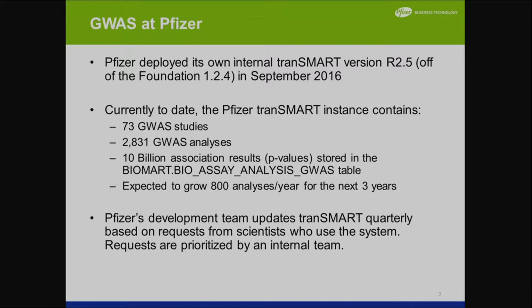We currently deployed a version in September last month. We're calling it R2.5 — it's off of the Foundations 1.2.4. Just some numbers: we have 75 GWAS studies, 2,800 GWAS analyses, and 10 billion associated p-values. We're expected to grow 800 analyses a year for the next three years. We have our development team specific for updating TransMart quarterly, and we rank these priorities by an internal team.